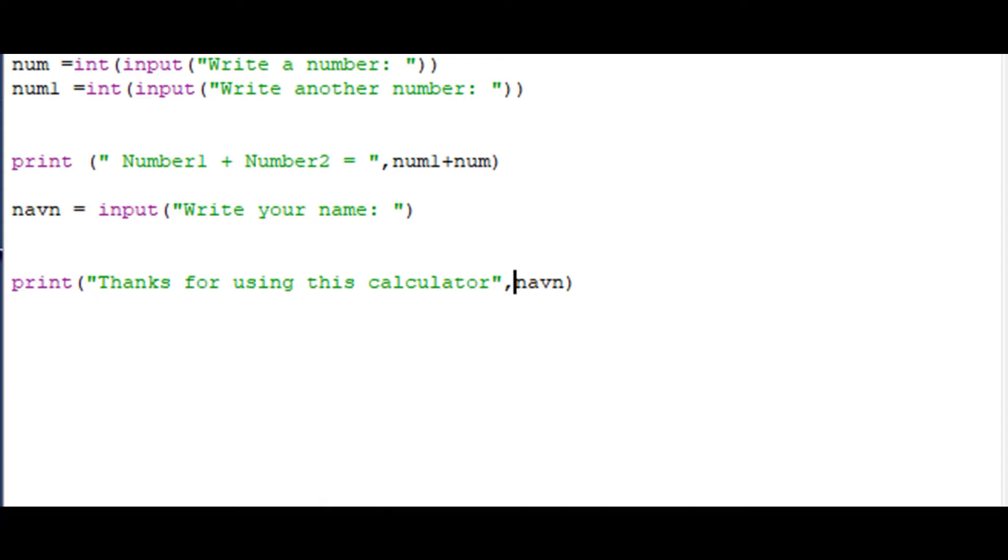The top lines are for entering the two numbers you are going to plus together. Line number two is to plus the two numbers together and give you the sum of the two numbers that you have entered first.